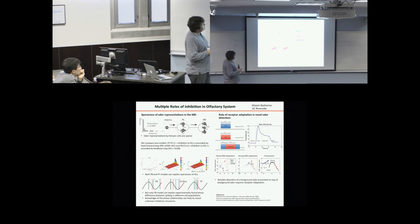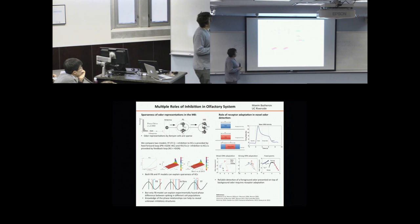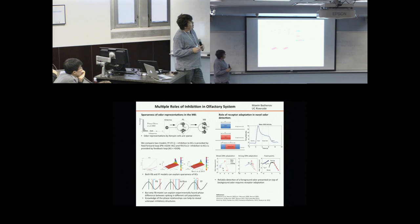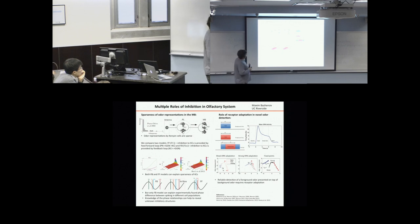If you look at downstream layers in the mushroom body, the representation by Kenyon cells is very sparse. This plot shows the probability of Kenyon cell response as a function of probability, and you can see most of them have very low probability. This is work in progress where we try to compare. When we started on this question, we first proposed that feedforward inhibition from lateral horn neurons could be responsible for the sparseness of Kenyon cell responses.